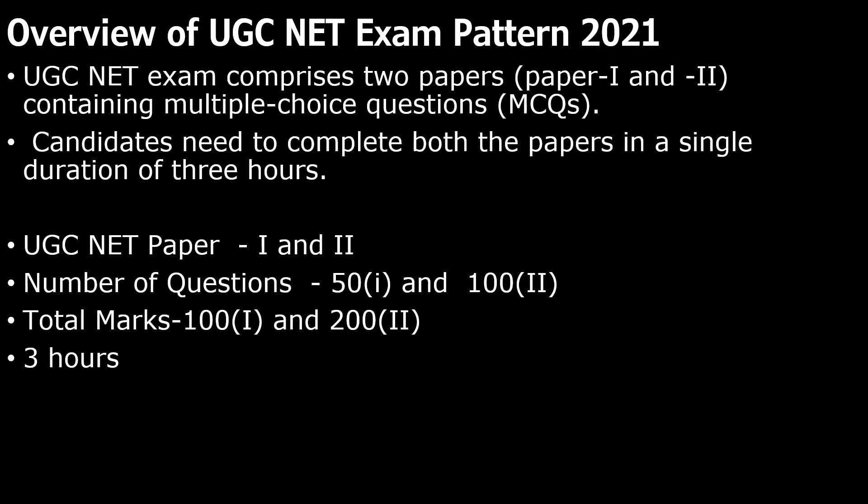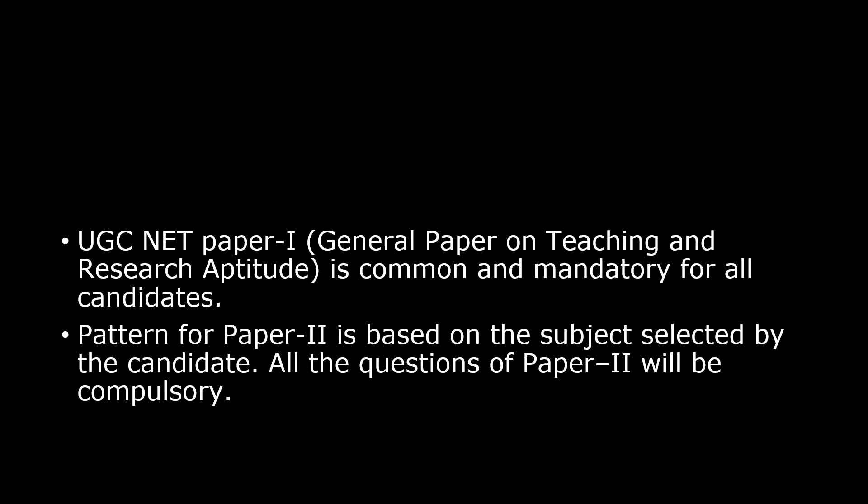In total, you have an examination of 300 marks. UGC Net paper one consists of a general paper on teaching and research, and this is the common and mandatory paper for all candidates, whether you belong to economics or any other discipline in social science. After completing paper one, you will be given paper two, which is based on your subject — the subject you have selected for your masters. All the questions in paper two are compulsory and there is no negative marking, so you can attempt all the questions.